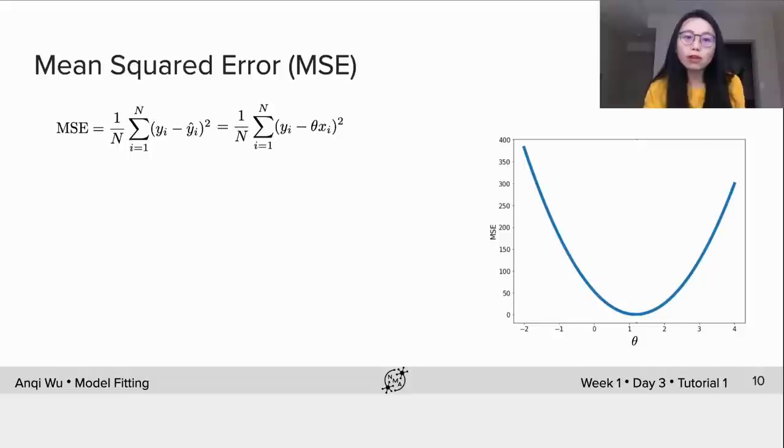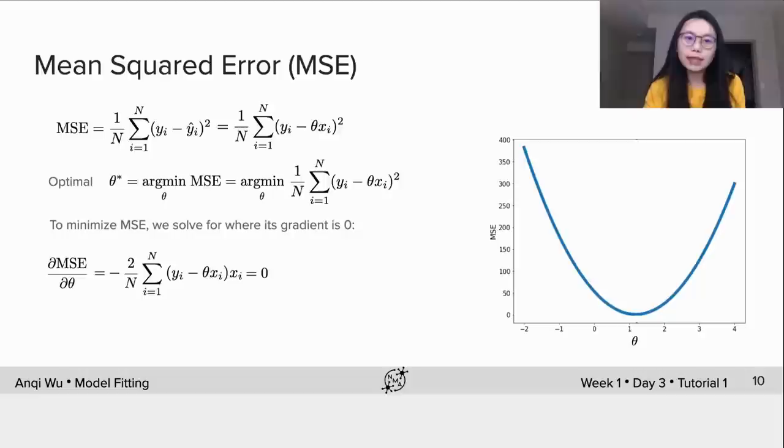Therefore, the optimal value of theta could be calculated by minimizing MSE. We can solve the minimization problem by setting the gradient of MSE with respect to theta to be zero.